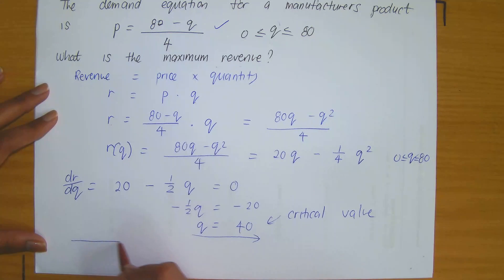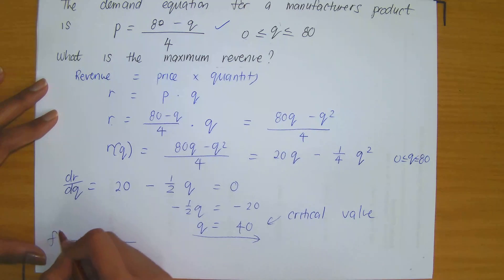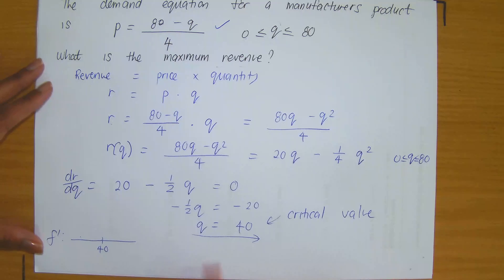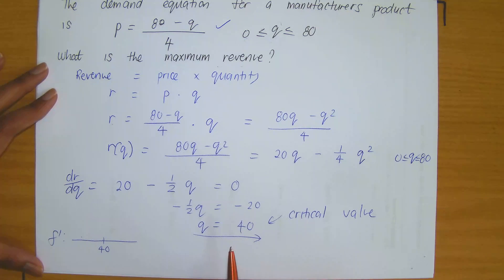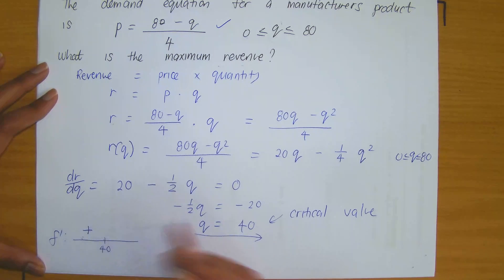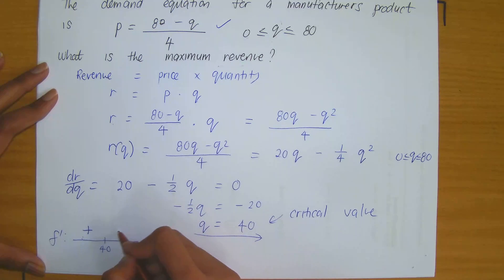So now we need to evaluate what's happening at the critical value. So if I place my critical value on the number line, what is happening to the left of Q and what is happening to the right of Q? When I evaluate F prime, if I plug in a value less than 40 into the derivative, observe that I will then obtain a positive answer. If you had to perhaps plug in Q equals to 10 into this, you would get a positive answer.